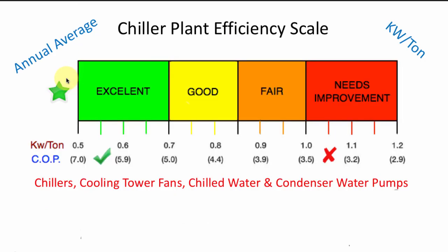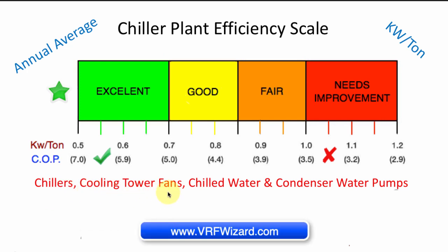If we look at a central plant, you would rate it by adding up your chillers, your cooling tower fans, and your chilled water and condenser water pumps — all the major power-consuming equipment in the central plant. When you do the KW per ton and COP calculations and add those together before calculating, you can see where your central plant falls. If you're falling in the red zone, there are efficiency improvements you can make. Simply add all the BTUs together, add all the KWs together, convert into BTUs per hour, and do the calculation the same way we did for the individual chiller.